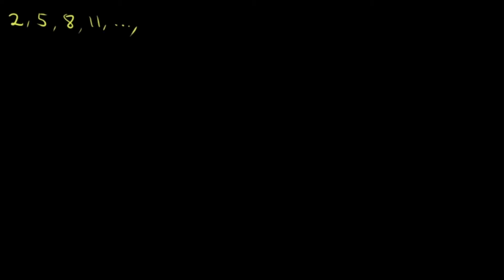Let's say that we have a sequence: 2, 5, 8, 11, and so on. The ellipsis means this sequence goes on forever, but what's given to us are the first 4 terms — 2, 5, 8, and 11.